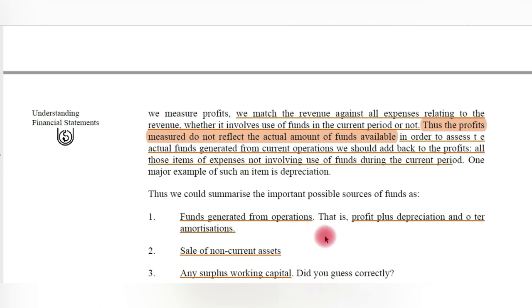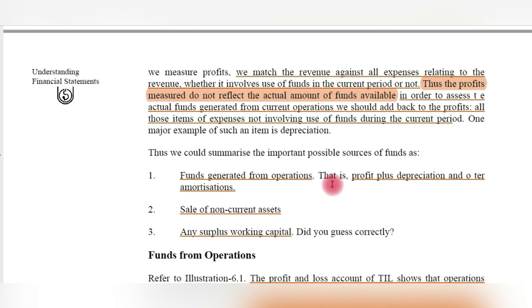The funds generated from operations equals profits plus depreciation and amortization. Depreciation is an expense where cash is not actually paid out — unlike tax, rent, electricity, wages, and interest, where cash does go out. Even though depreciation is deducted from gross profits to arrive at net profit, no cash is actually leaving the business. Therefore, if we add back depreciation to net profit, we get the actual funds generated from operations.